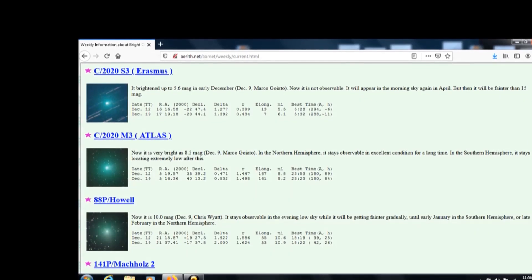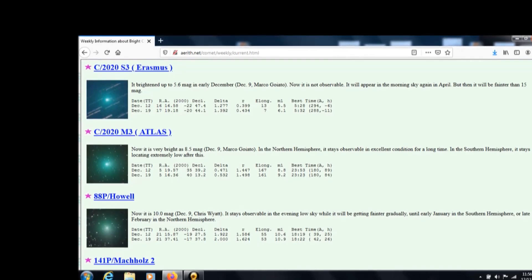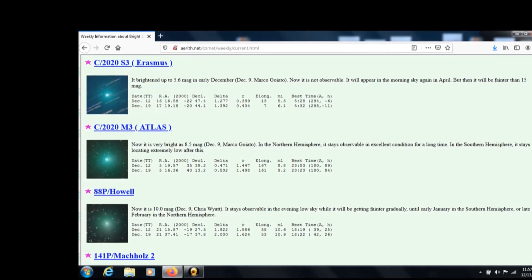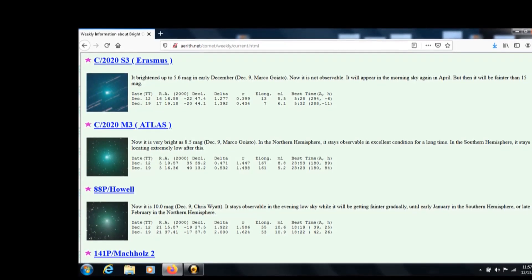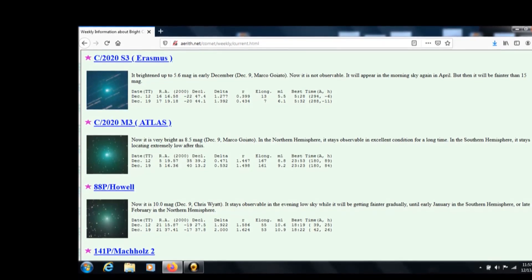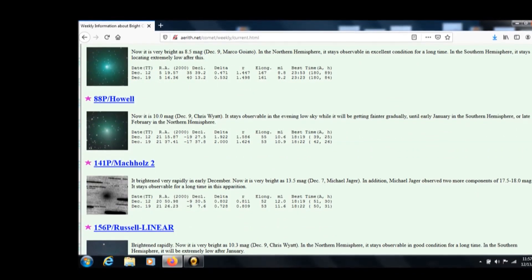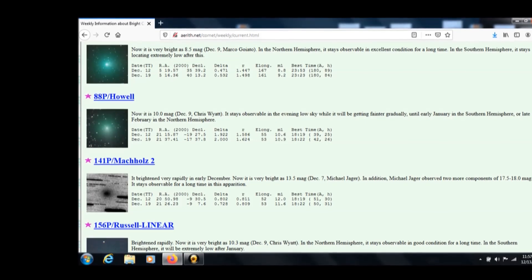One of those comets we could probably see on Stereo A. We've identified it as Comet C2020 S3 Erasmus, and we'll show you its orbital diagram shortly. Matches perfectly with what we are seeing, but there's also C2020 M3 Atlas.